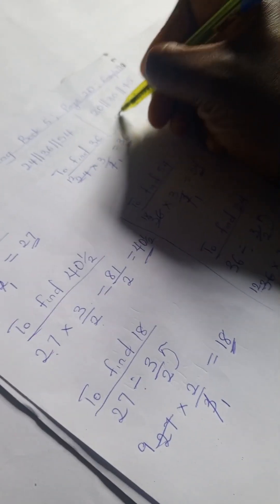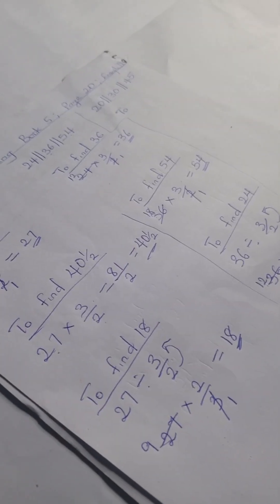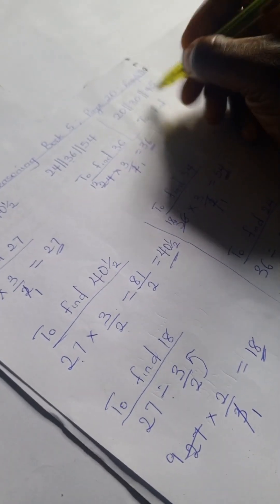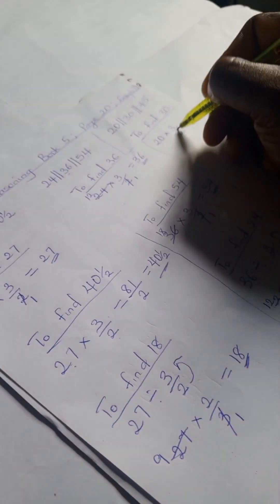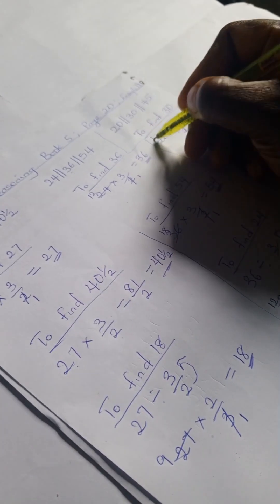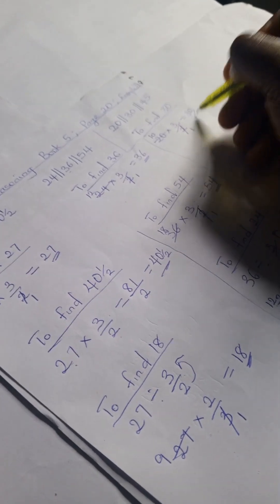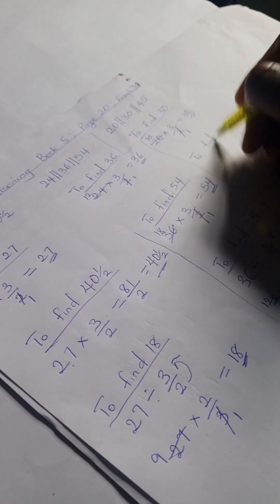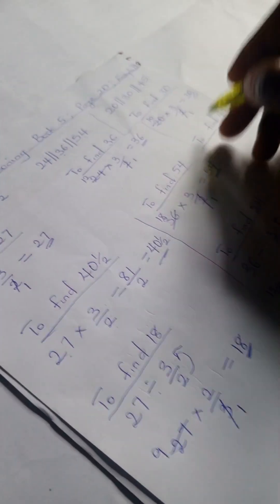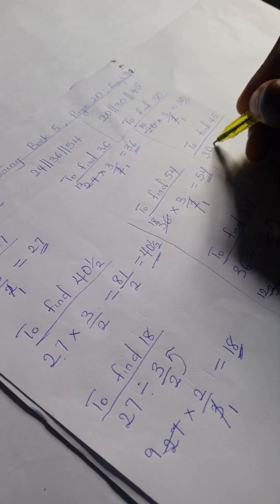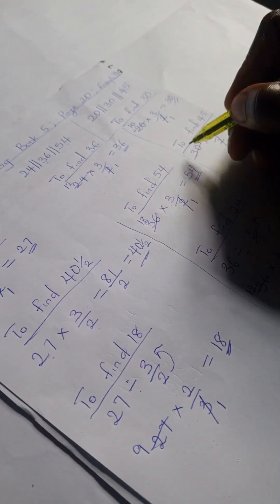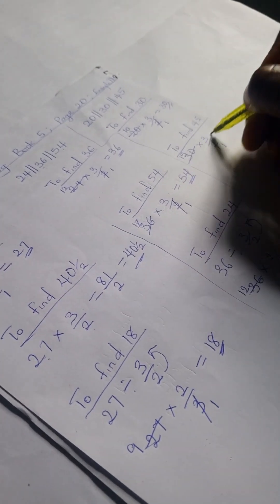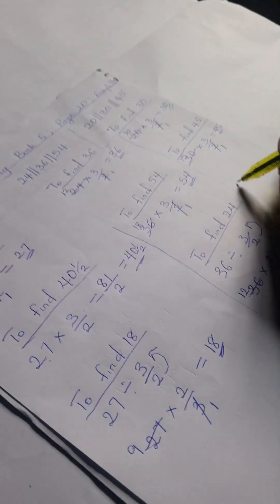If we apply the same method for this example we will get the same answer. To find 30, we have 20 times 3 over 2. 2 divides into itself giving 1, and 2 divides into 20 giving 10. 10 times 3 gives us 30. To find 45, we have 30 times 3 over 2. 2 divides into 2 giving 1, and 2 divides into 30 giving 15. So 15 times 3 gives us 45.